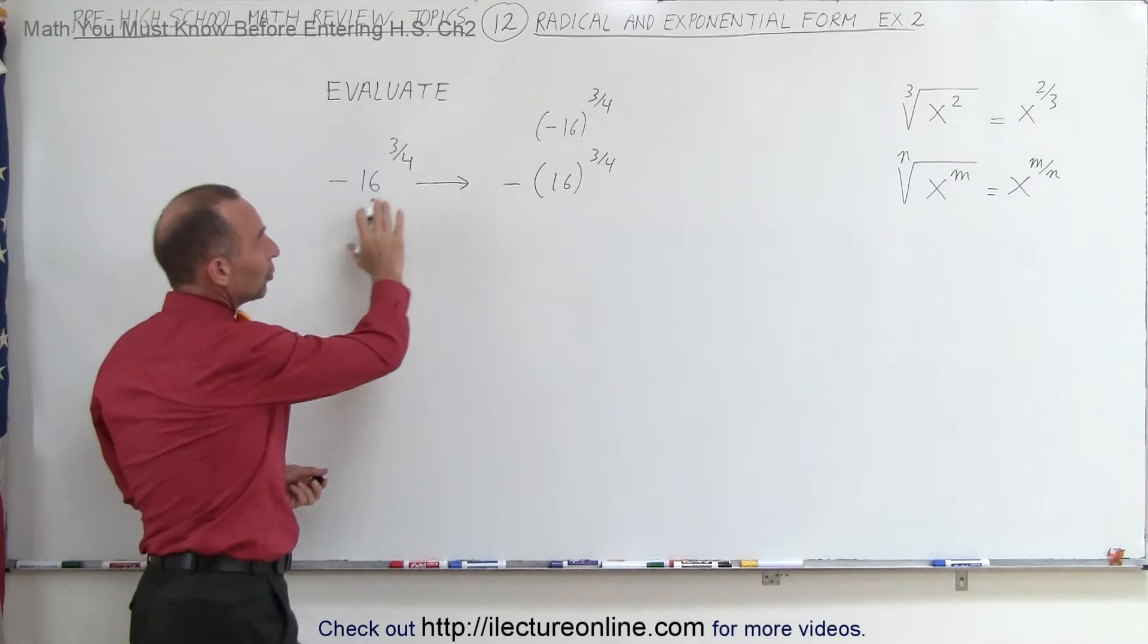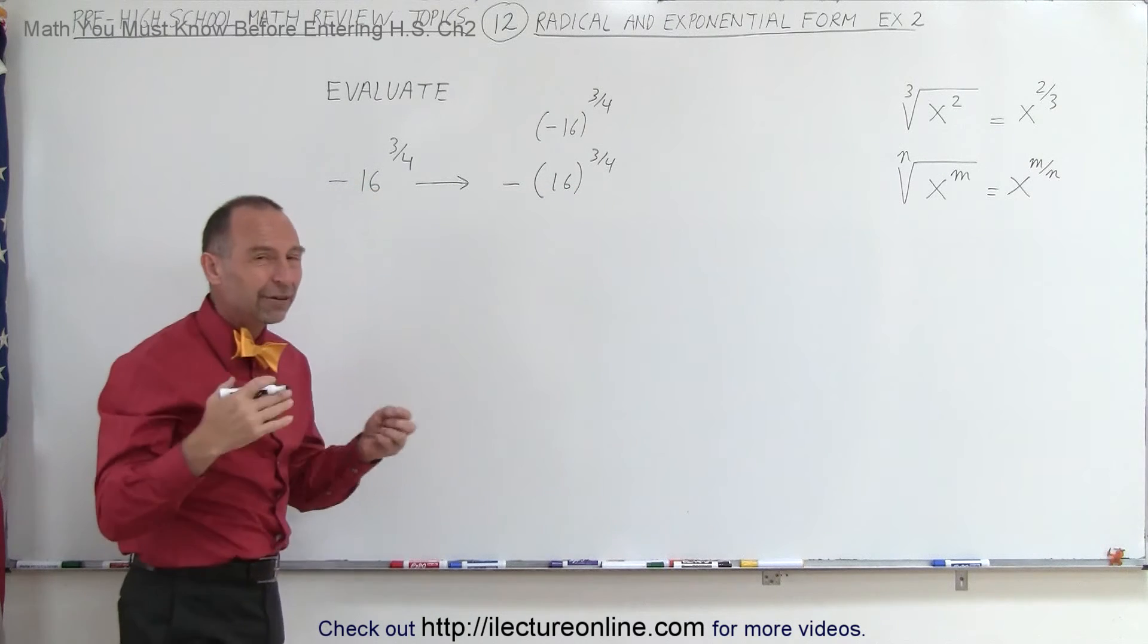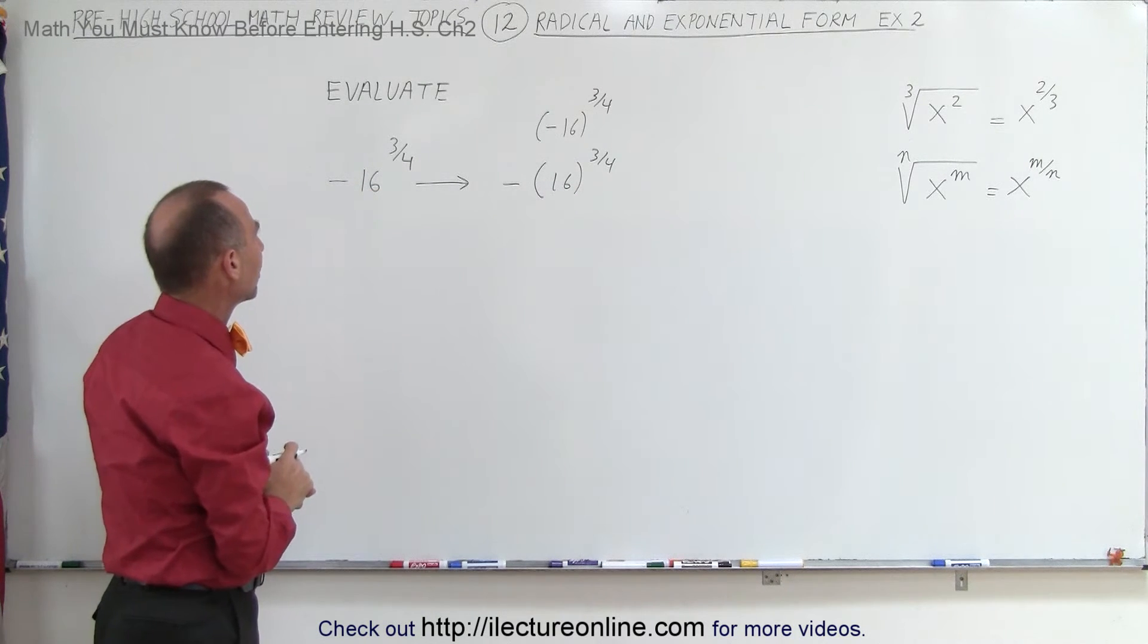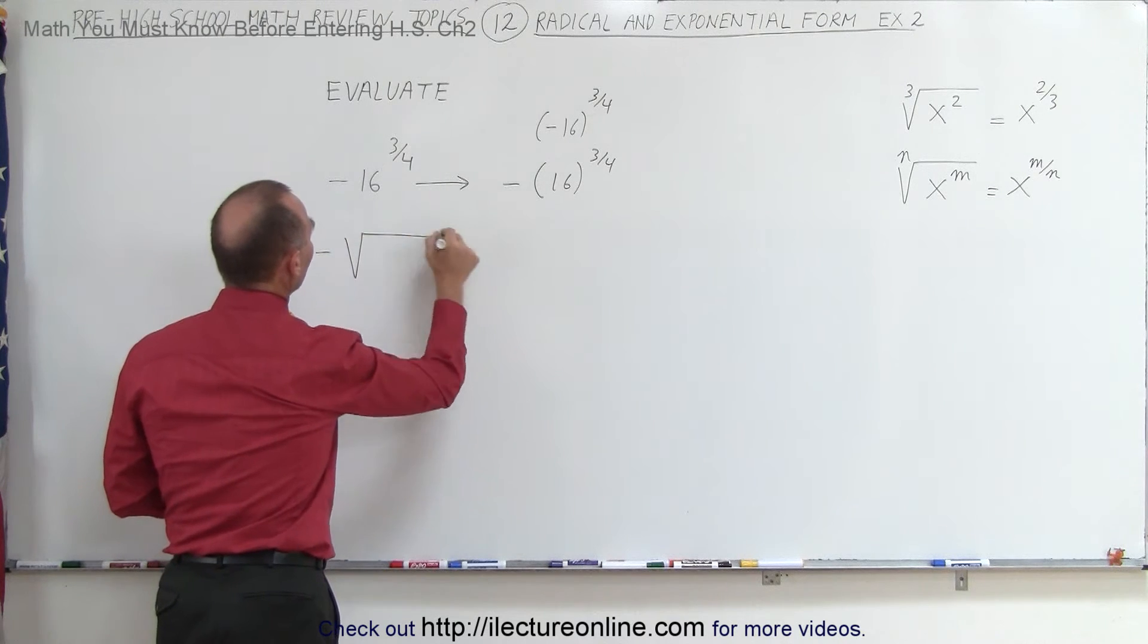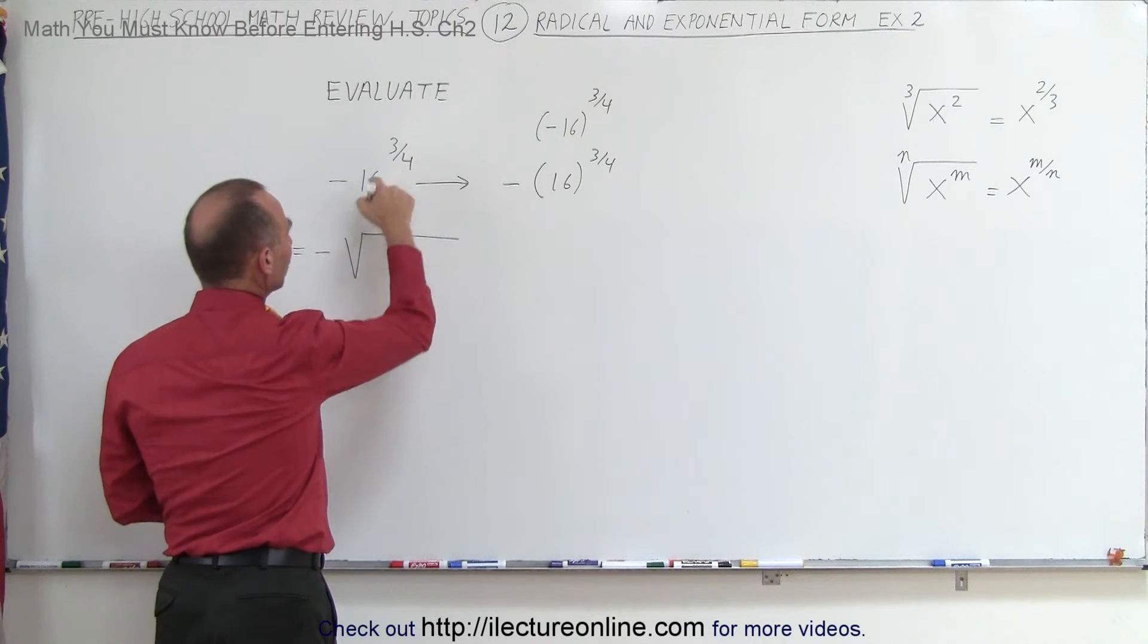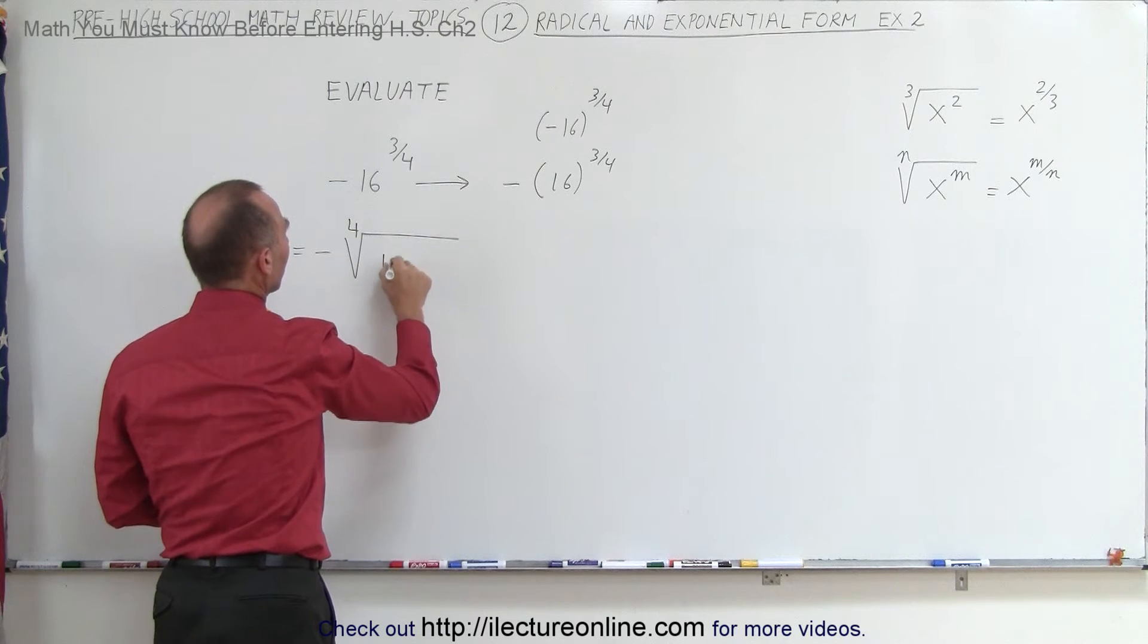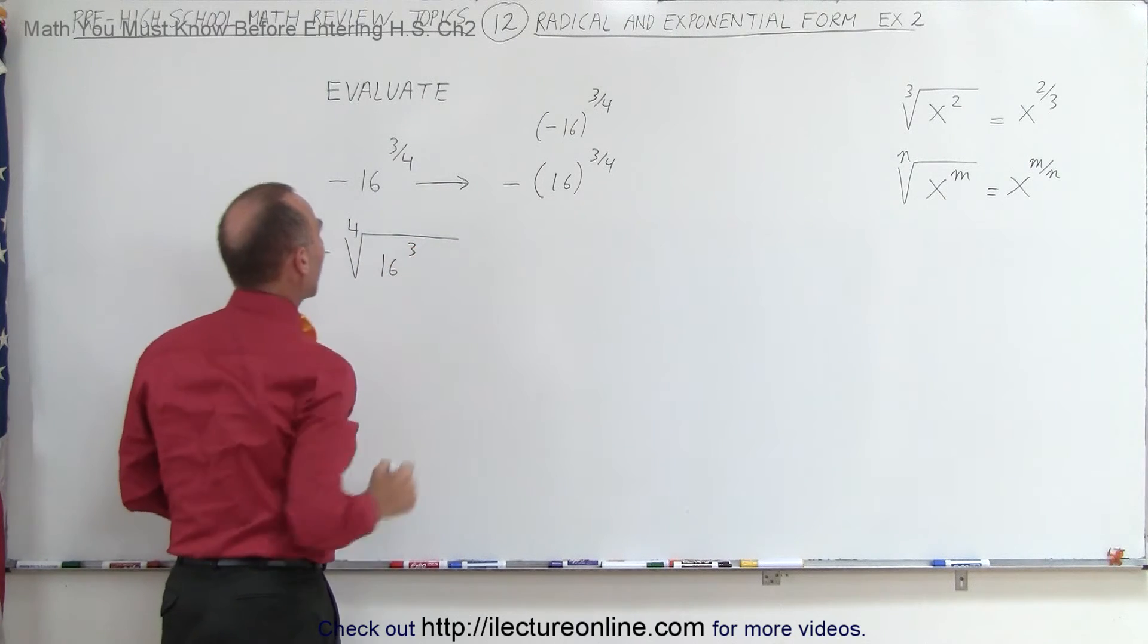It helps to be able to put this into radical form to get a feel of what we're trying to do. So this can also be written as negative radical sign. The number at the bottom is the root, so it's the fourth root of this number raised to the 3rd power.